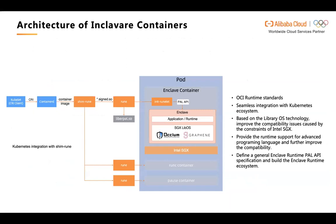This is the architecture of Inclave Containers. It can be integrated with Kubernetes and Docker. Taking Kubernetes as an example: Kubernetes calls containerd, and containerd interacts with SHIM runE. SHIM runE is a shim for the Enclave OCI runtime. It implements the Shim Runtime V2 API and works between containerd and runE. Besides typical shim work, SHIM runE also conducts Enclave signature and remote attestation. Together, SHIM runE and runE compose a basic Enclave container stack for the cloud-native ecosystem.